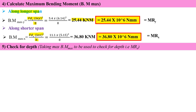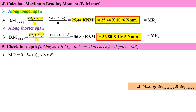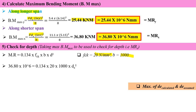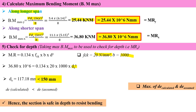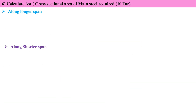Check for depth using the maximum bending moment. The formula is Mr = 0.134 × fck × b × d². With fck = 20 N/mm², b = 1000 mm, and the maximum moment, the required effective depth d = 117.18 mm, which is less than the assumed 150 mm. Therefore, d_calculated < d_assumed, so the section is safe in depth.